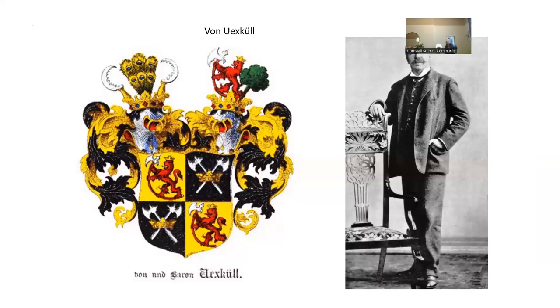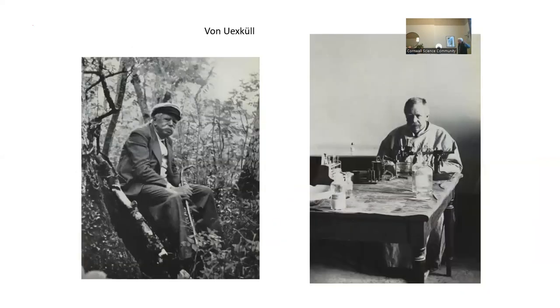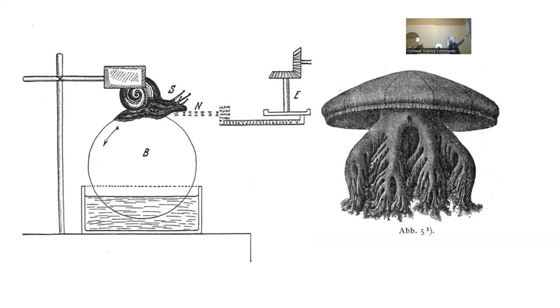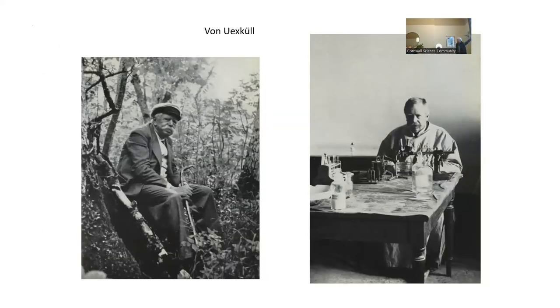I've already mentioned Von Uexküll. He was actually, as the Von gives away, he was an aristocrat. One of the reasons why he's been eclipsed in the second half of the 20th century - but if that's tantalizing, you can always ask me about it later. Here he is in what I would regard as his natural environment. He was an aristocrat, had lands in Estonia, and in the Russian Revolution lost all of his lands.